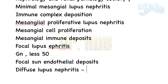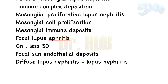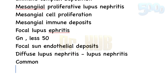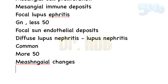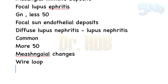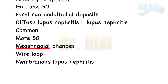Class 4 is diffuse lupus nephritis, the most common and severe form. It involves diffuse glomerulonephritis affecting more than 50% of glomeruli, with diffuse subendothelial deposits, with or without mesangial changes, and the presence of distinct wire loop structures on light microscopy.